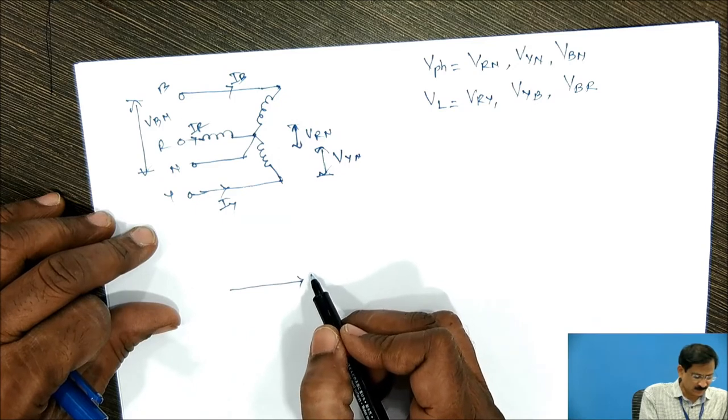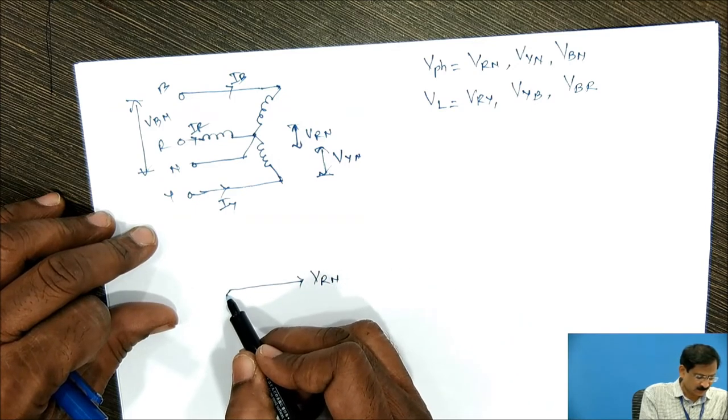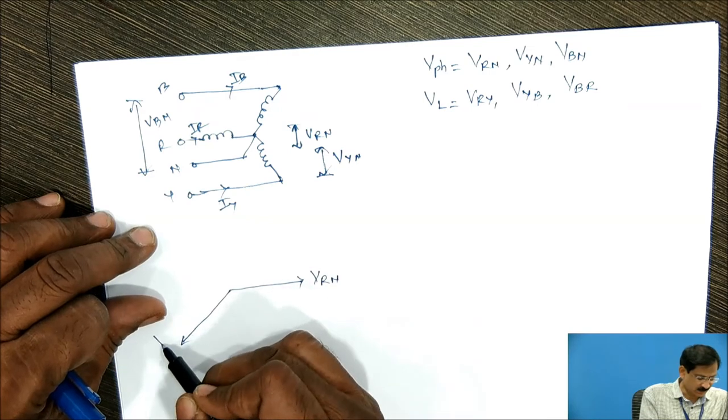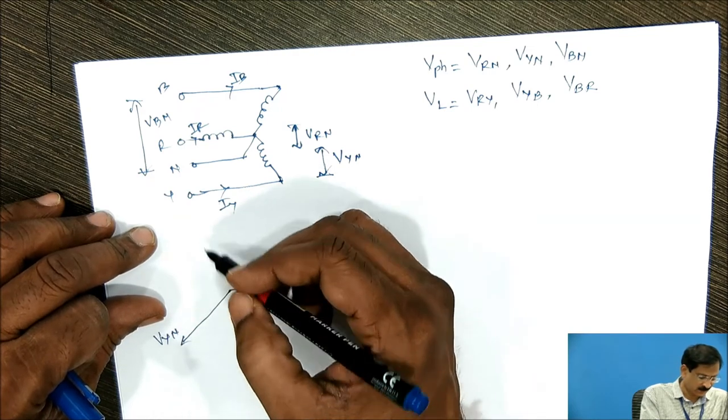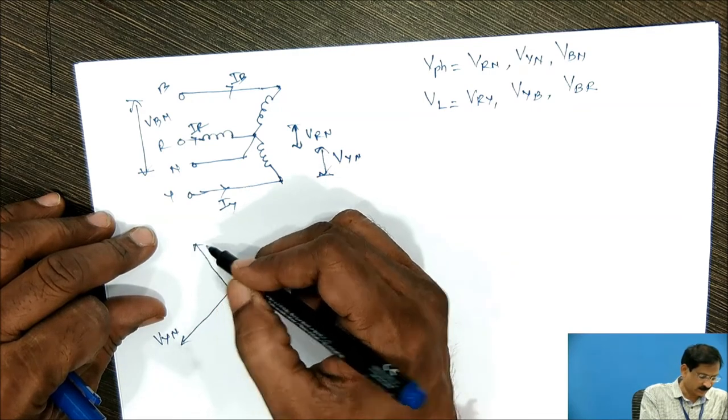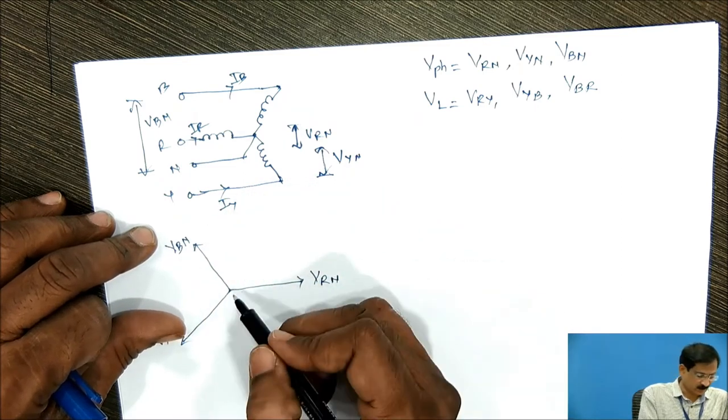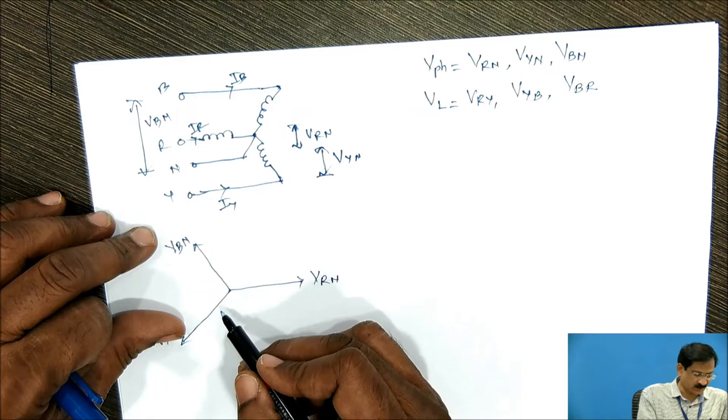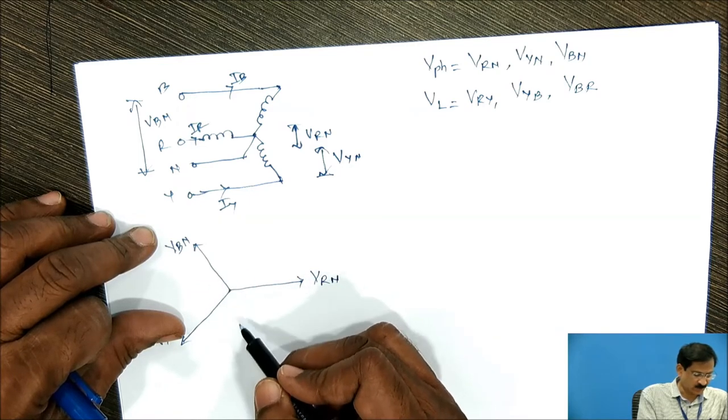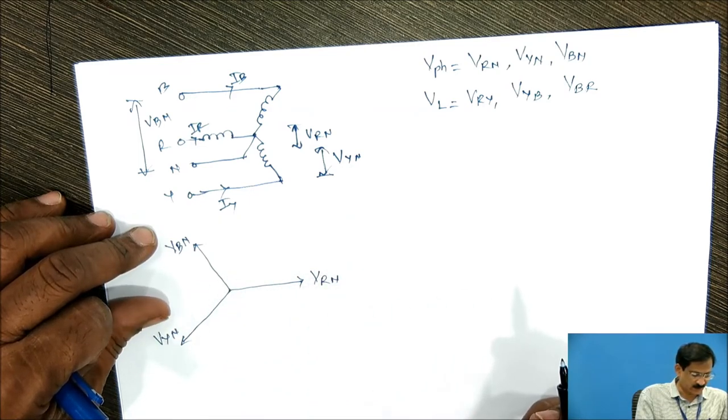This is VRN, 120 degree delayed by VYN, and this is VBN. All these are 120 degree apart. For the sake of simplicity, I will not show the angle. So all these three are 120 degree apart.